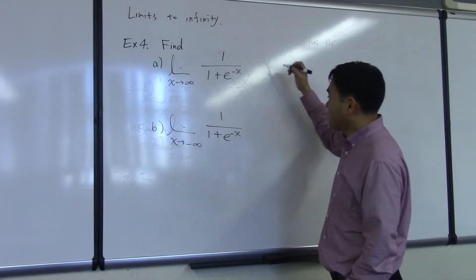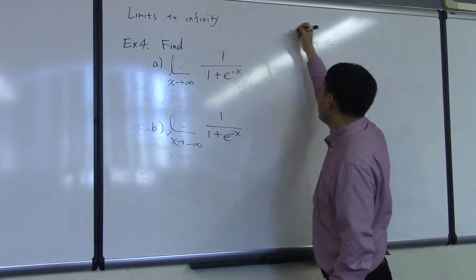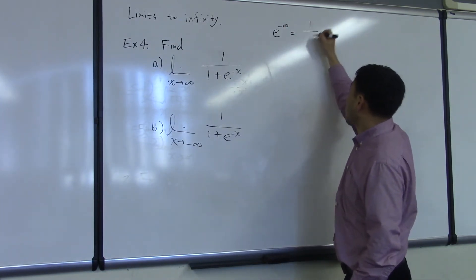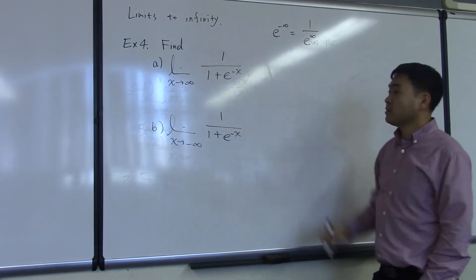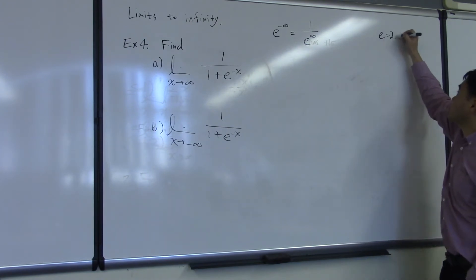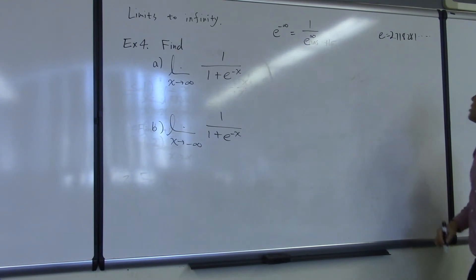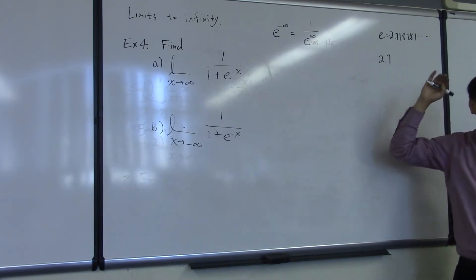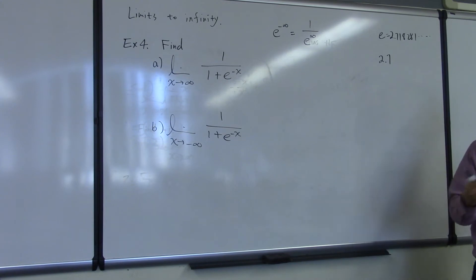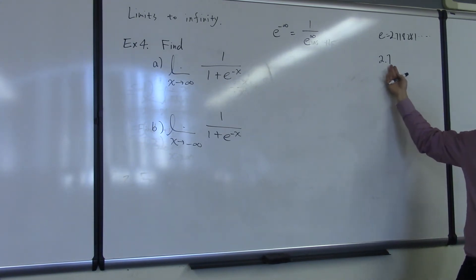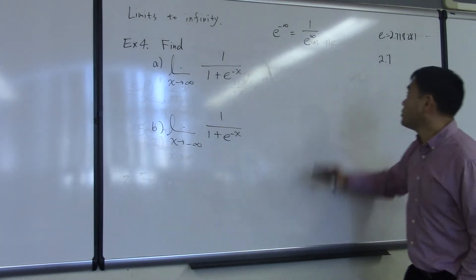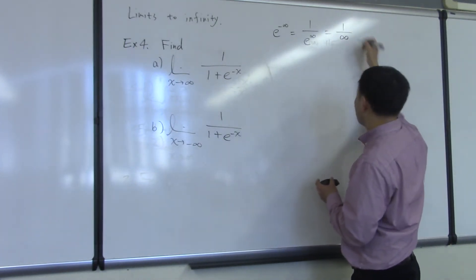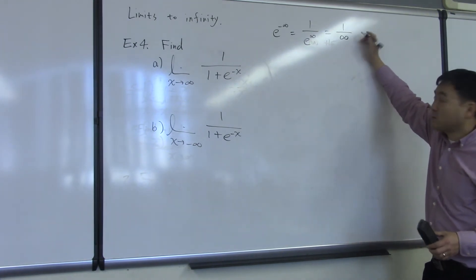What's helpful for solving these questions is: what is e to the negative infinity? As you know, anything to the negative power means 1 over, so this means 1 over e to the infinity. Because e is approximately 2.71828, if you multiplied 2.7 by itself many, many times, the numbers increase — so 2.7 to the infinity power gives you infinity at the bottom. And 1 divided by infinity gives you zero.